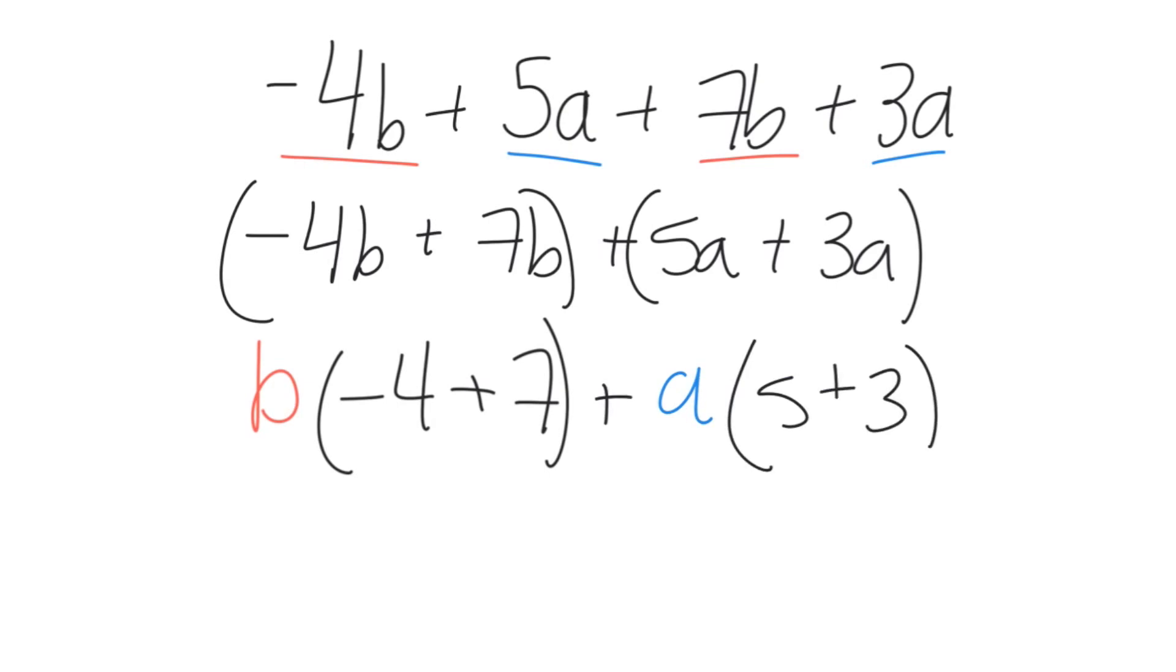Then we want to combine the numerical coefficients, so we have b times negative 4 plus 7 is equal to 3, plus a times 5 plus 3 which is equal to 8.